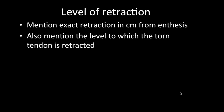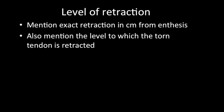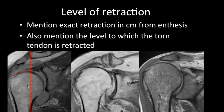Next, mention the exact retraction of the tendon in centimeters from the enthesis and the level to which it is retracted. Measure from the greater tuberosity to the retracted tendon margin for the centimeter measurement. By level: retracted to the mid humeral head, retracted to the glenohumeral joint line, or retracted medial to the glenoid.